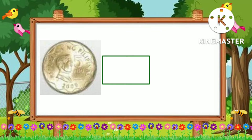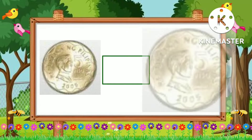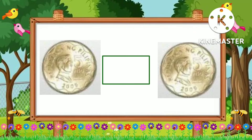The third example here is a five peso coin and another five peso coin. The symbol that we're going to use here is equal, because the value of the money is the same.